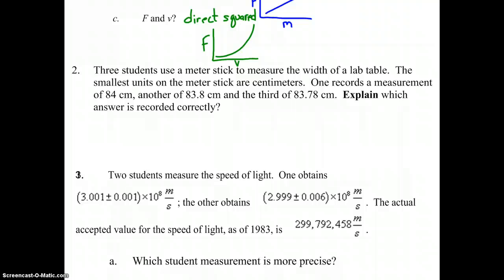Well, when making a significant measurement, and that's what this question is addressing, you're allowed to go to the smallest unit on the measuring device plus one guess. So the smallest measurement, smallest unit on this measuring device is in centimeters. That means you're allowed to express your answer to what you think to what the nearest centimeter is, and then one guess beyond that.